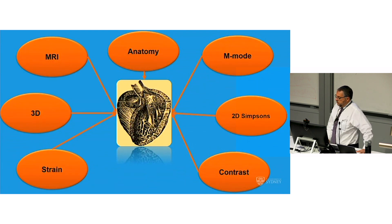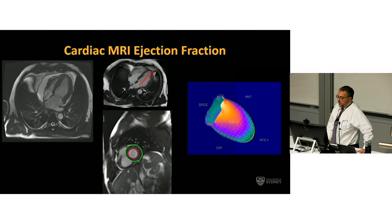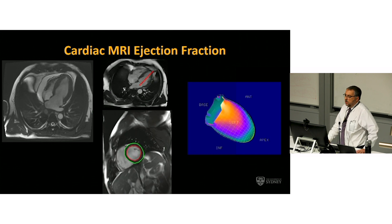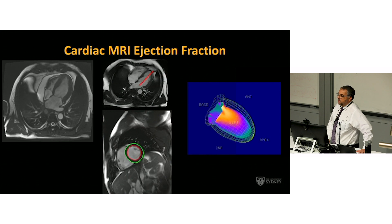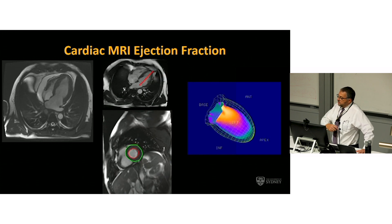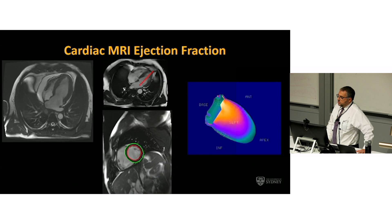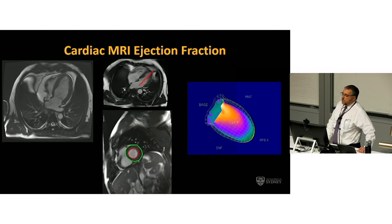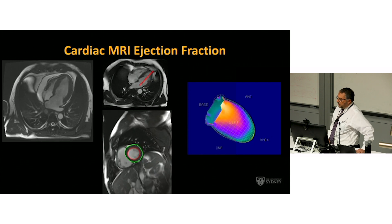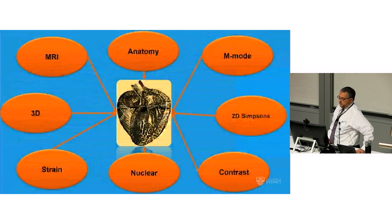Moving forward to other technologies: MRI is clearly the gold standard. It has the advantage of crystal-clear pixel quality, but the disadvantage that it's a large scanner you can't wheel up to the ICU, and every time you go in your watch gets pulled toward the machine. But it is a beautiful piece of equipment and does the exact same thing — it edge-tracks the endocardium to get a volume in systole and diastole and generate functional maps.